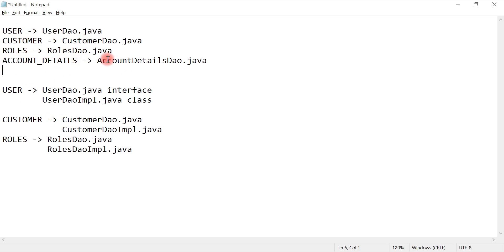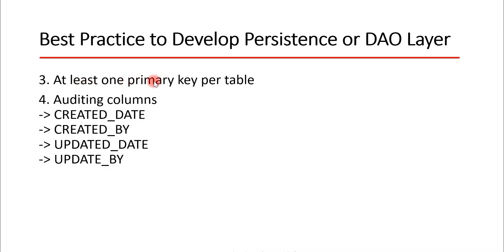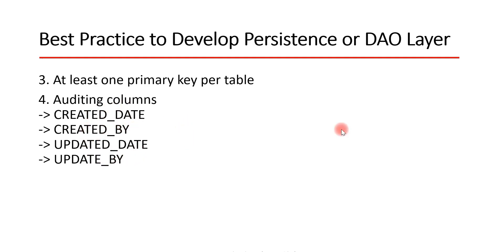Let's explore a few more best practices. You should always have at least one primary key per table. When creating a primary key, use a long data type and sequences to generate it, and ensure the primary key is unique within the table. For auditing, use standard auditing columns that are commonly found in enterprise applications: created_date, created_by, updated_date, and updated_by.